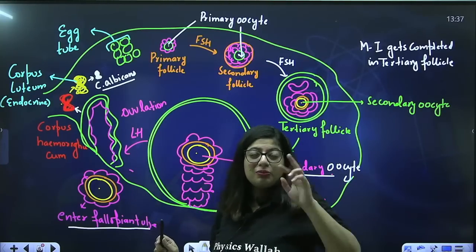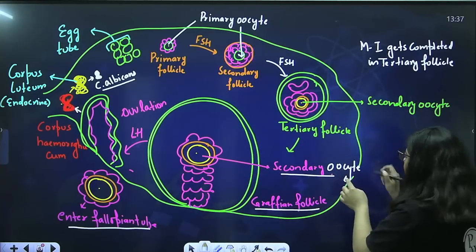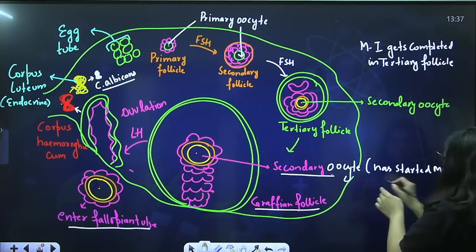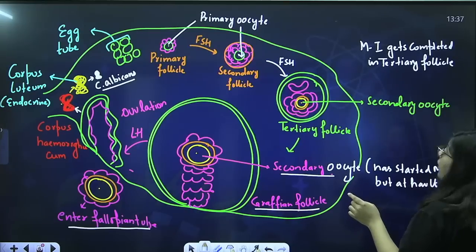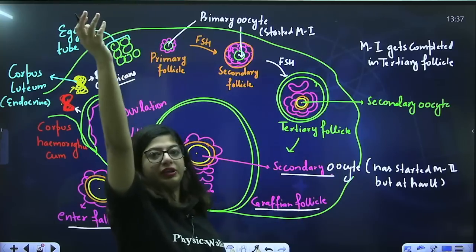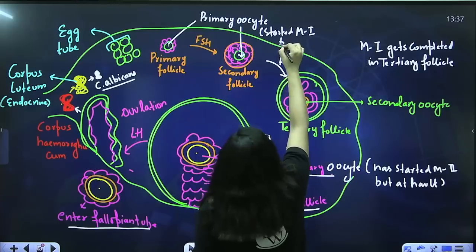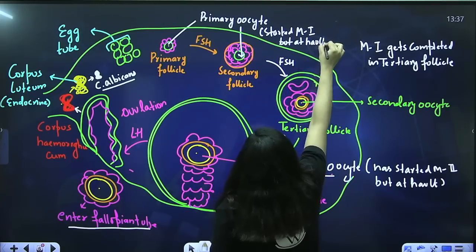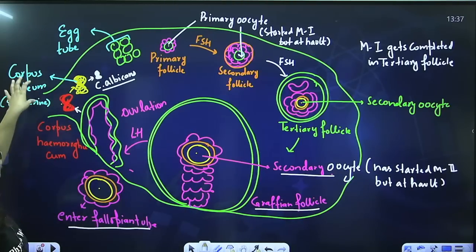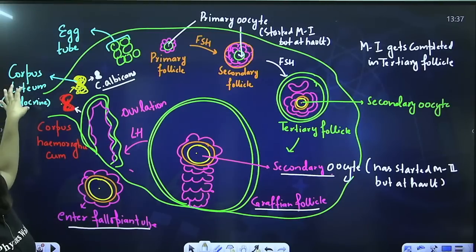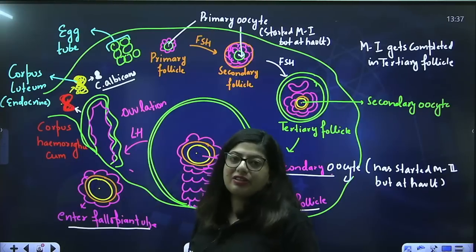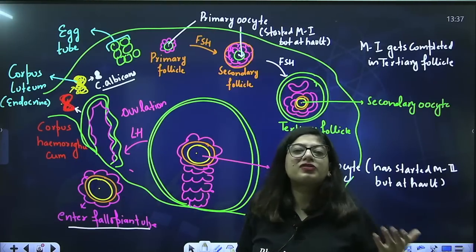Meiosis II has been started in the secondary oocyte but is at halt. Similarly, meiosis I had already started before birth but was at halt. Whatever is left from the Graafian follicle becomes corpus haemorrhagicum, which becomes corpus luteum, which becomes corpus albicans. Corpus luteum is the yellow-colored body; corpus albicans is the white-colored body — and corpus luteum is endocrine. This is how oogenesis or ovum formation occurs in the female.